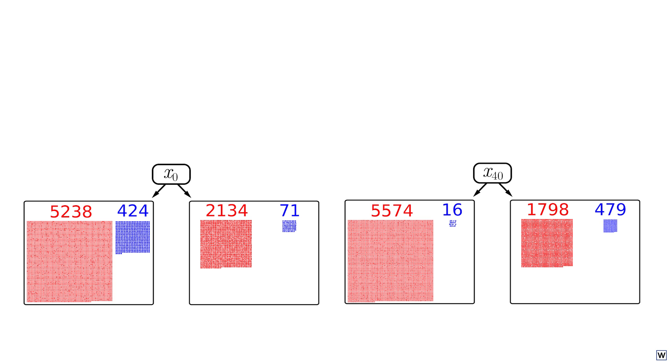One nice thing about our x40 split is that although both nodes are majority negative, it actually does begin to separate our data, especially our positive finger examples. Since most of our finger examples end up in our right node, this could be the root of a pretty terrific tree.